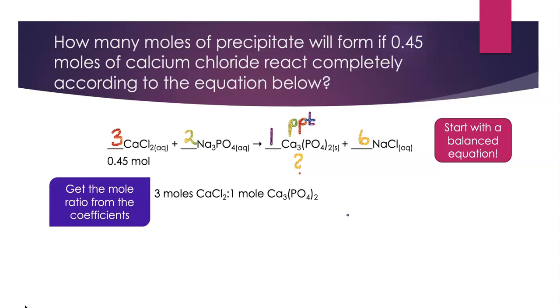So the coefficients tell us that there are three moles of calcium chloride for every mole of calcium phosphate that forms. Now we're ready to set up our factor label. X, what we're solving for, equals what we're given. X moles calcium phosphate equals 0.45 moles calcium chloride.